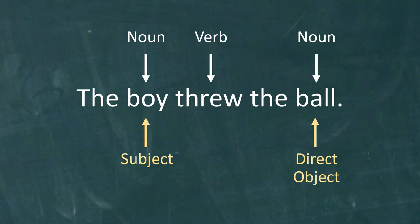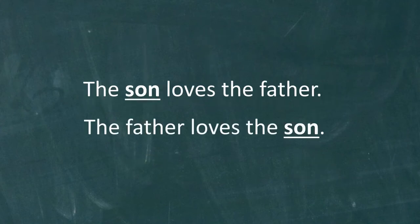Now that we've reviewed some basic terminology, let's talk about the Greek case system. Consider first these two English sentences: the son loves the father, and the father loves the son. In the first sentence, son is the subject and father is the direct object.